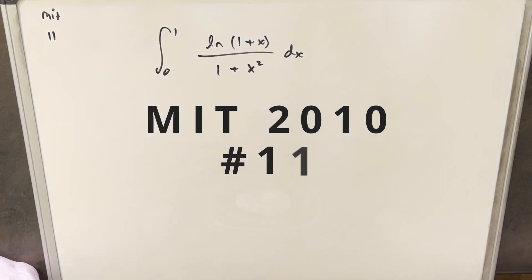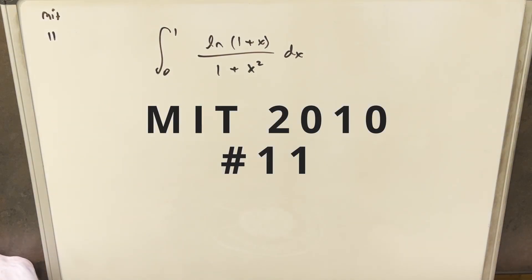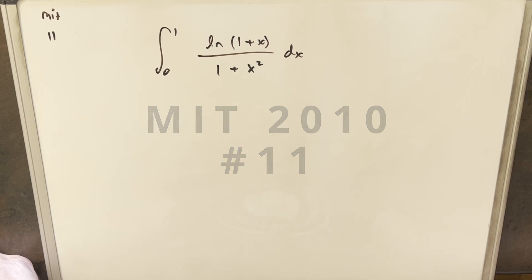Hey, we have another integral from MIT Integration Bee 2010. This is problem 11. We have the integral from 0 to 1 of natural log of (1 plus x) over (1 plus x squared) dx.